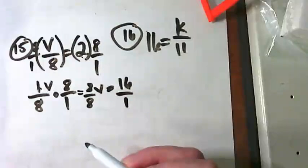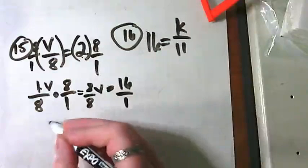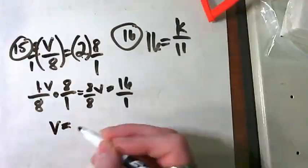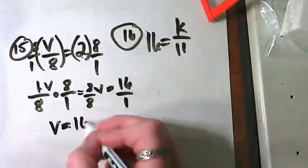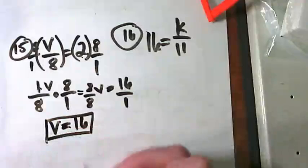What is 8 over 8? 1. That leaves me with a V. What is 16 over 1? There it is.